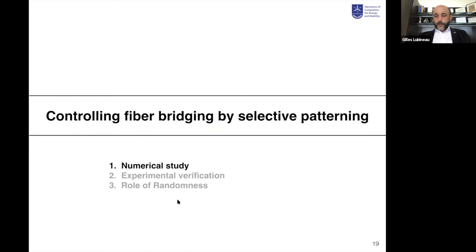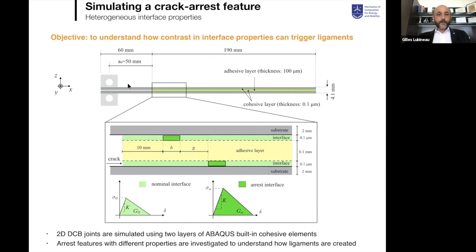Depending on the level of fluence, you can give different surface properties at different locations. To control bridging by selective patterning, we start with a numerical study. Consider a DCB beam made of two CFRP substrates with a bulk adhesive layer connected by two layers of cohesive elements — light green with relatively low strength and low toughness, and dark green with high strength and high toughness. We examine how this system responds to crack propagation at the bottom of the adhesive system depending on the relative properties of these regions.